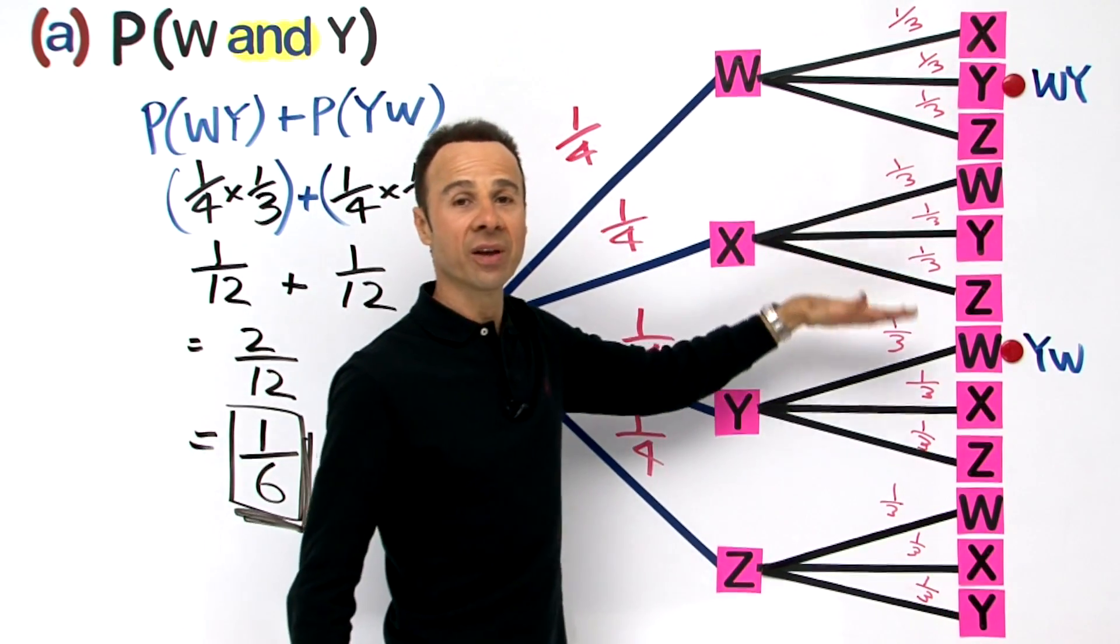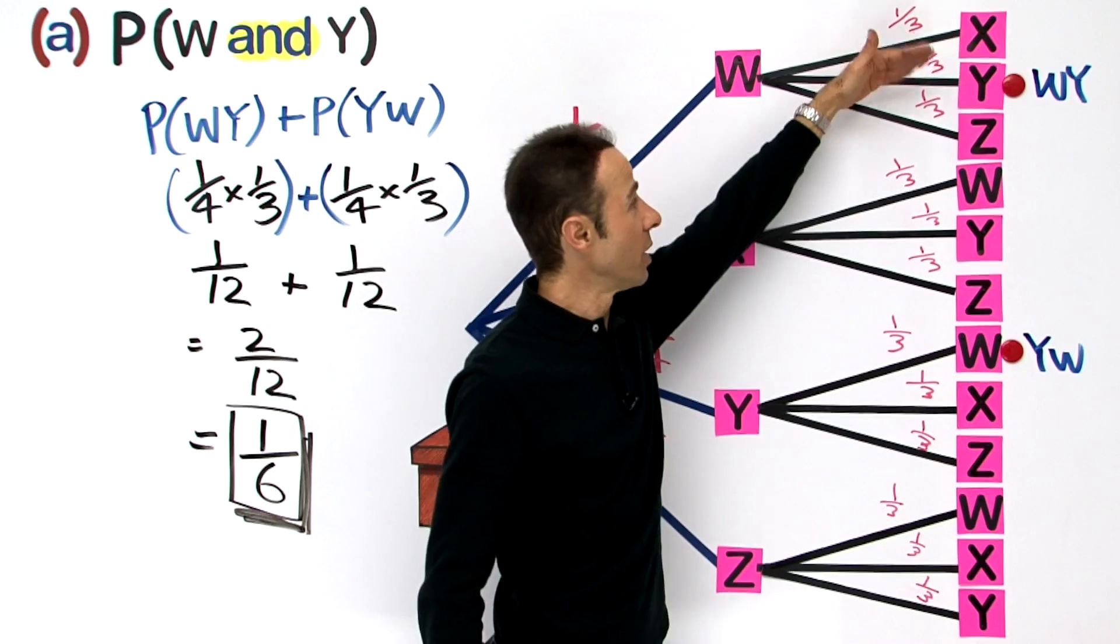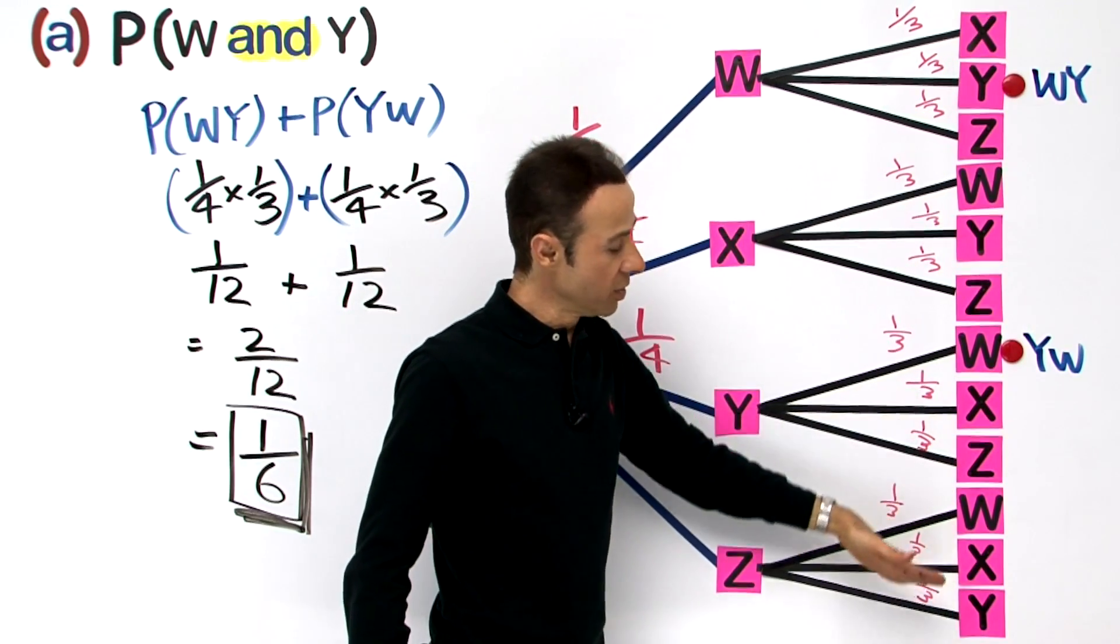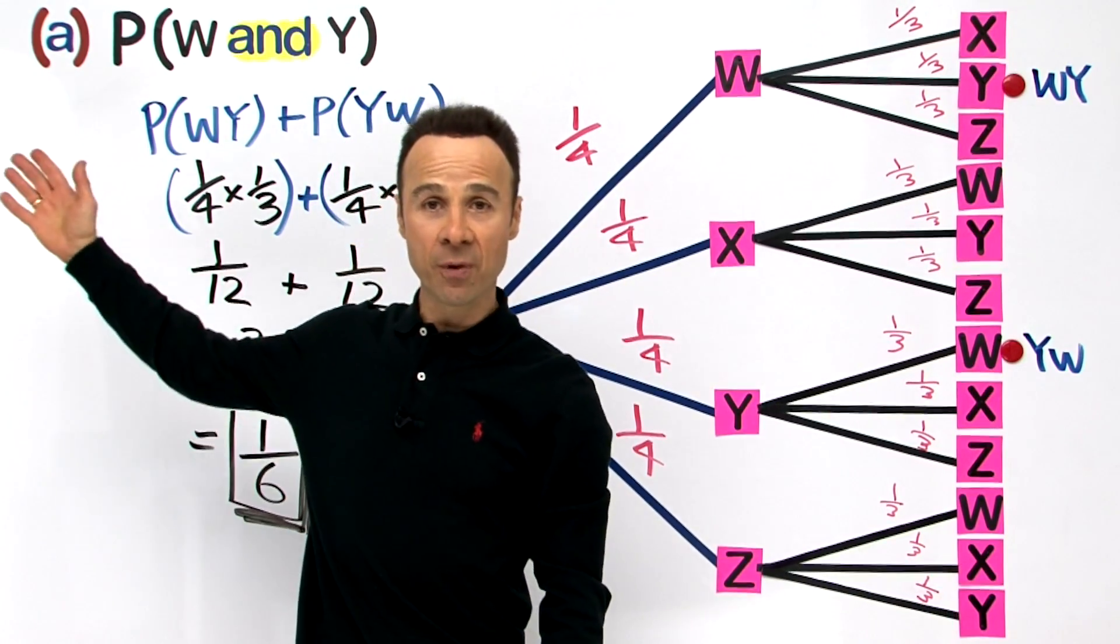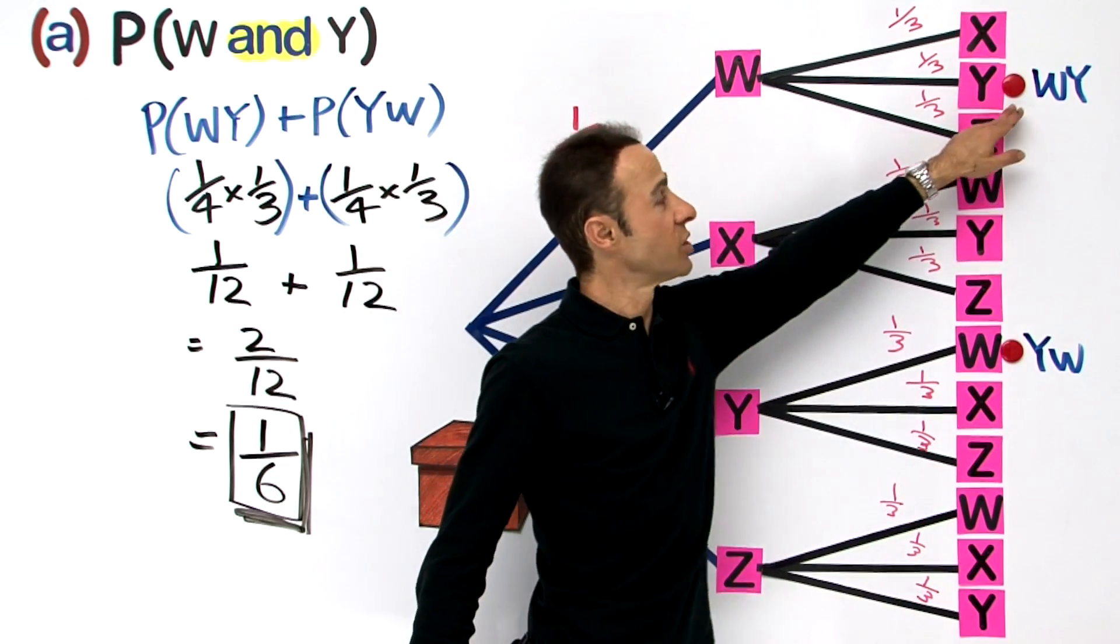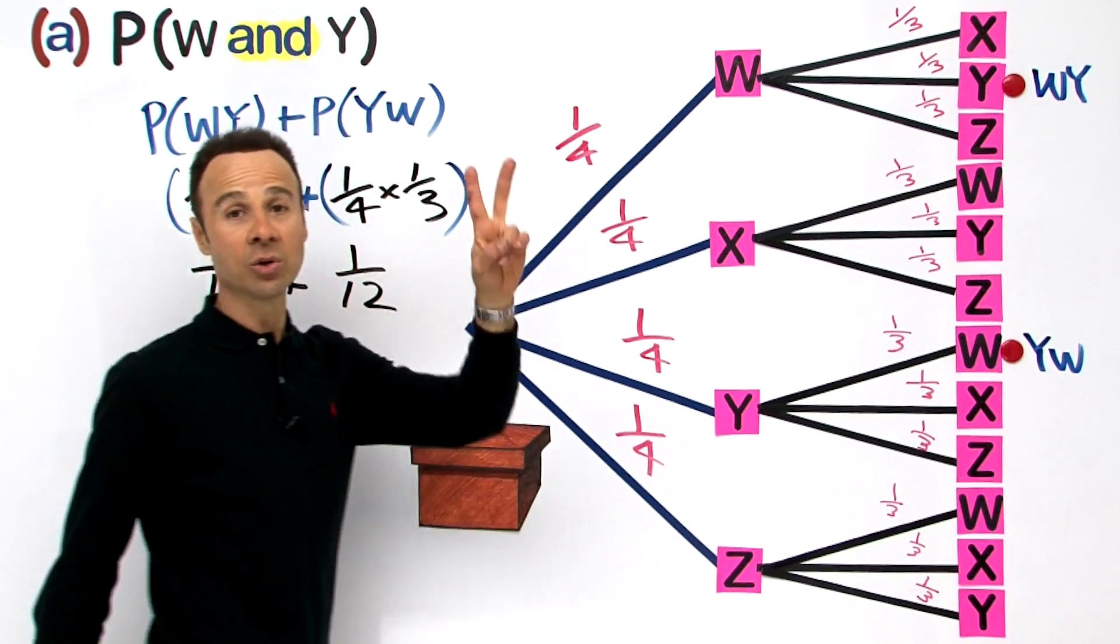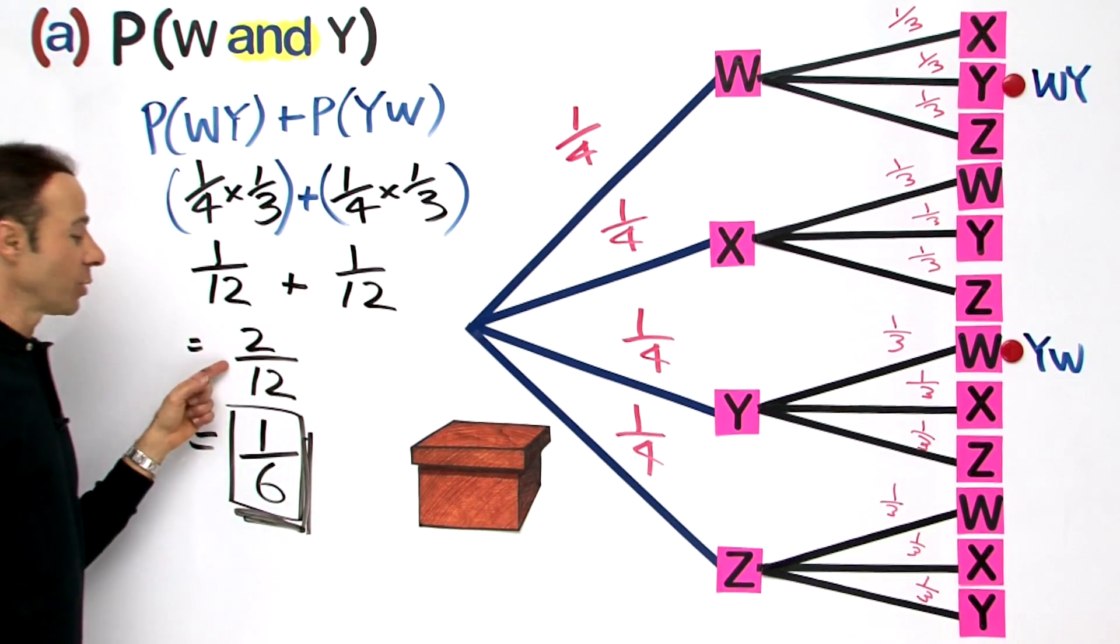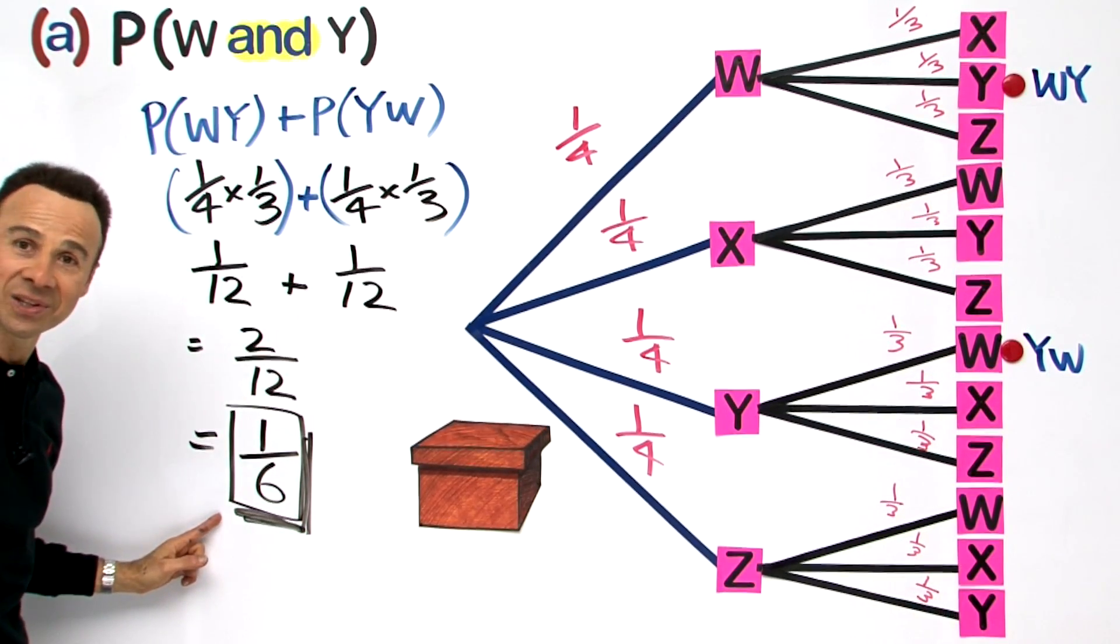Now if we count all these, there are 12 possibilities in the sample space: 1, 2, 3, 4, 5, 6, 7, 8, 9, 10, 11, 12 possibilities. And the favorable outcomes from the criteria of the question are the W and the Y, which is 1, and the Y and the W, which is 2. So that again is 2 chances out of 12, which gives us the same answer: 1 chance out of 6.